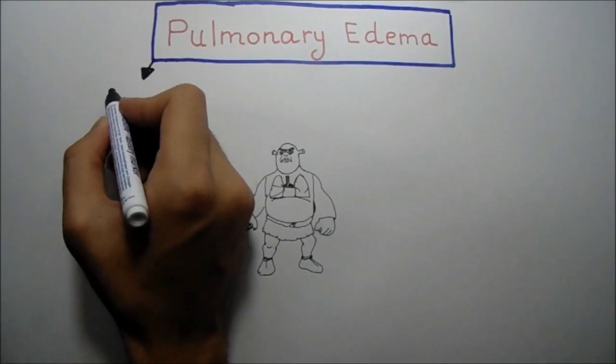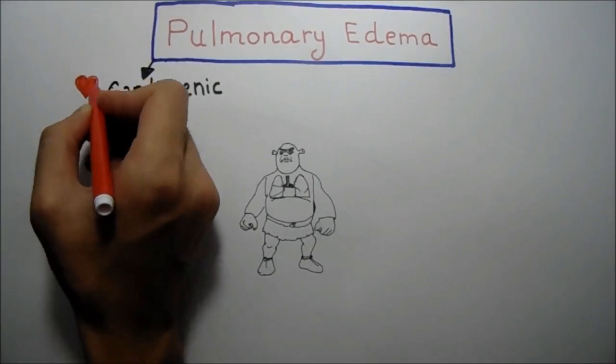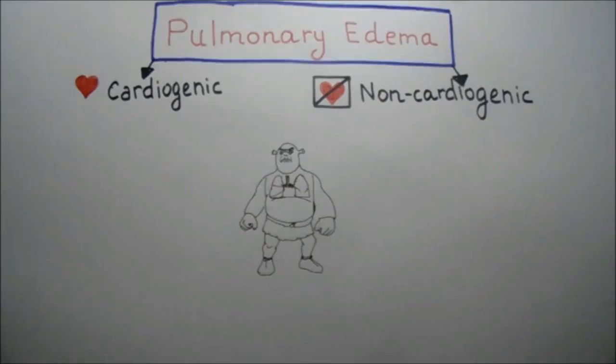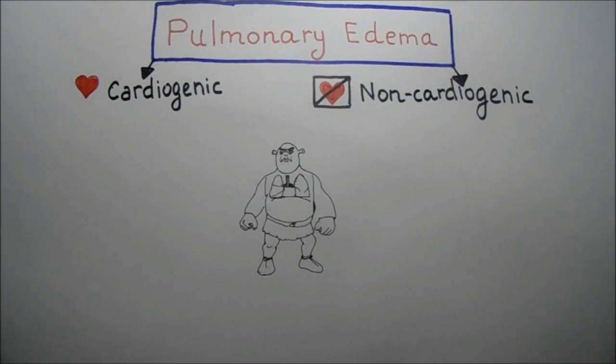For these reasons, pulmonary edema is divided into cardiogenic and non-cardiogenic. Let me explain the mechanisms of development for these forms of edema.